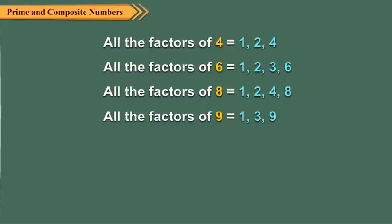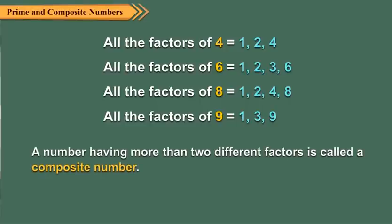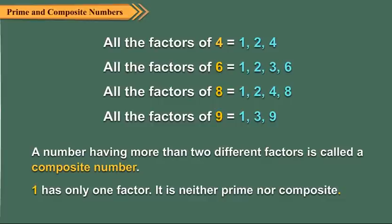You can see that 4, 6, 8 and 9 have more than two factors. We call these numbers composite numbers. So a number having more than two different factors is called a composite number. 1 has only one factor, so it is neither prime nor composite.